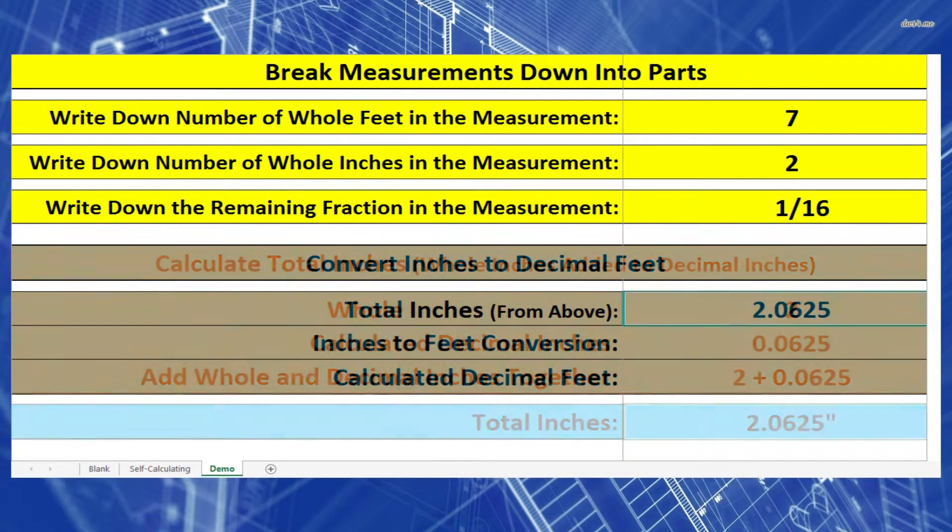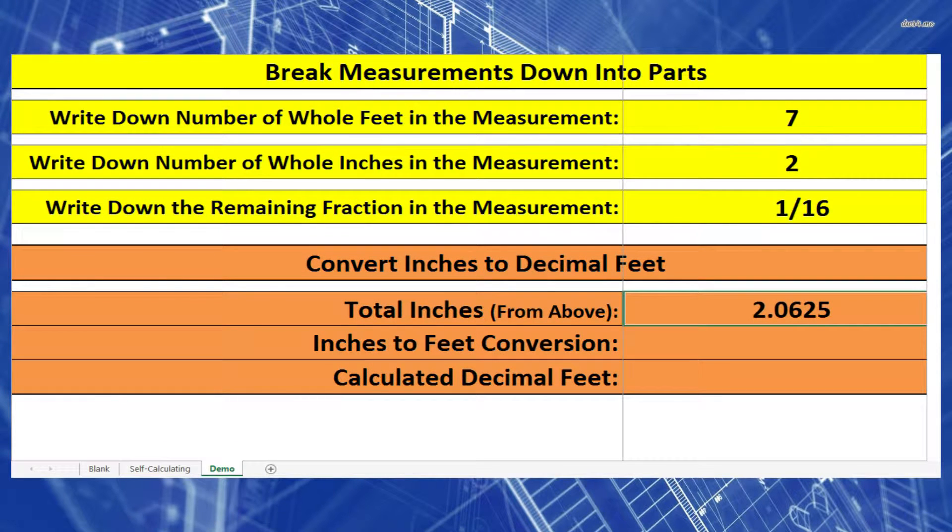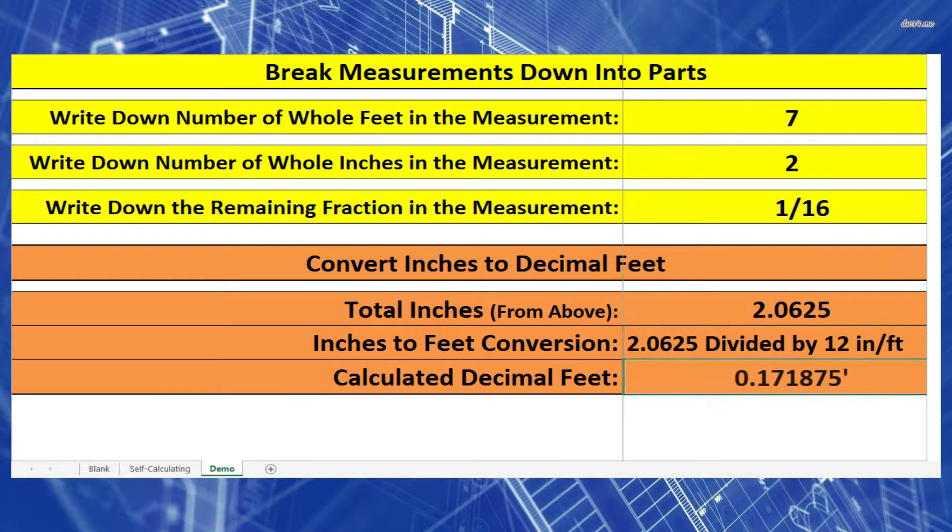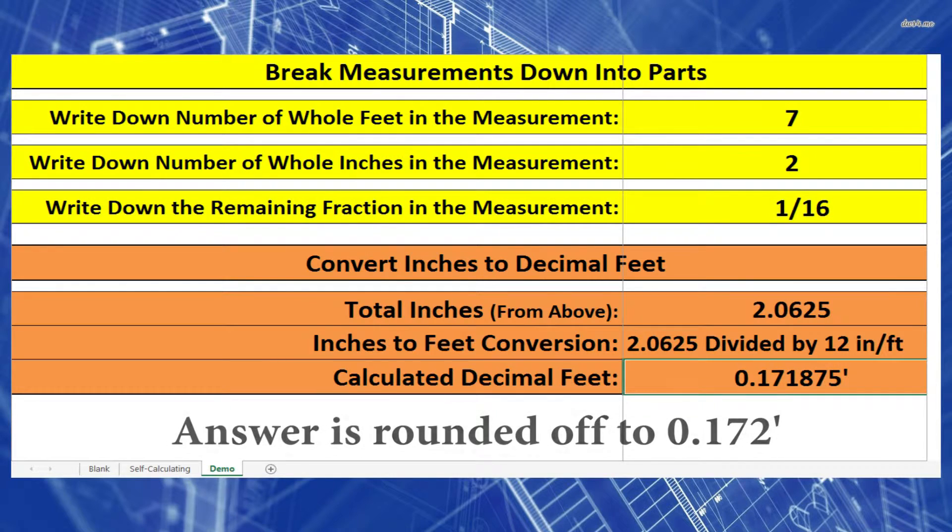Now I need to convert those inches into feet. So I'm going to take 2.0625 inches and divide it by 12 inches per foot. Now I'm going to get a pretty small number here with a lot of decimal places behind it. So that should give you 0.171875 feet.